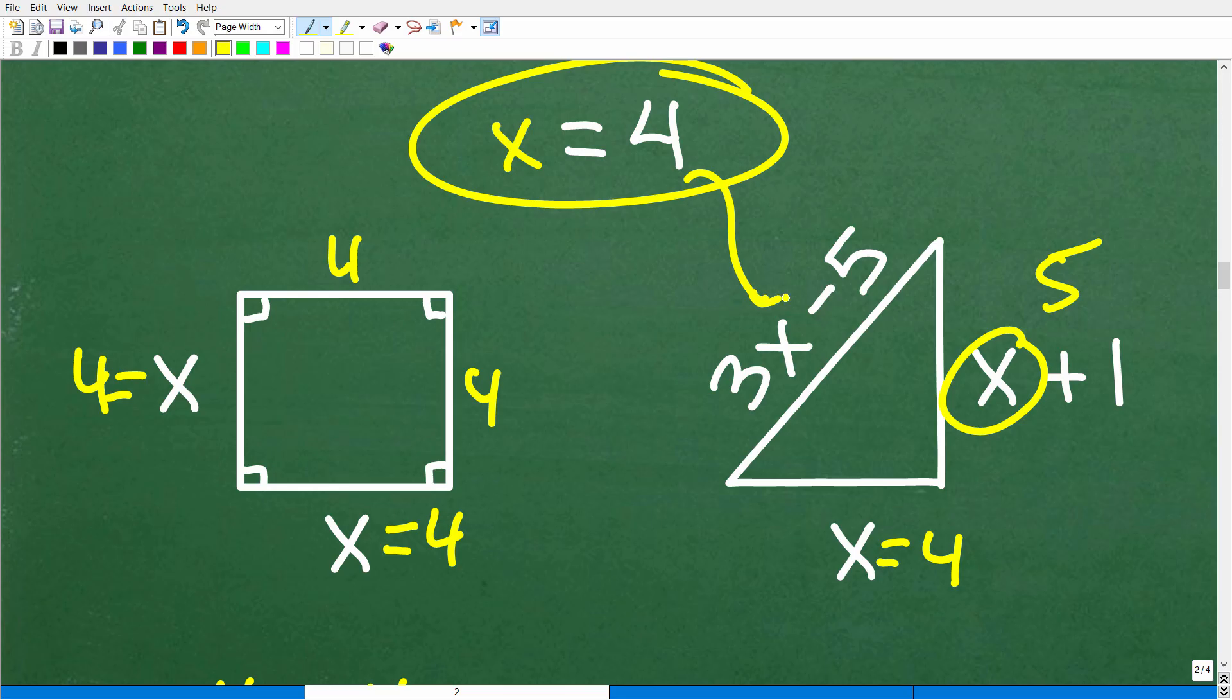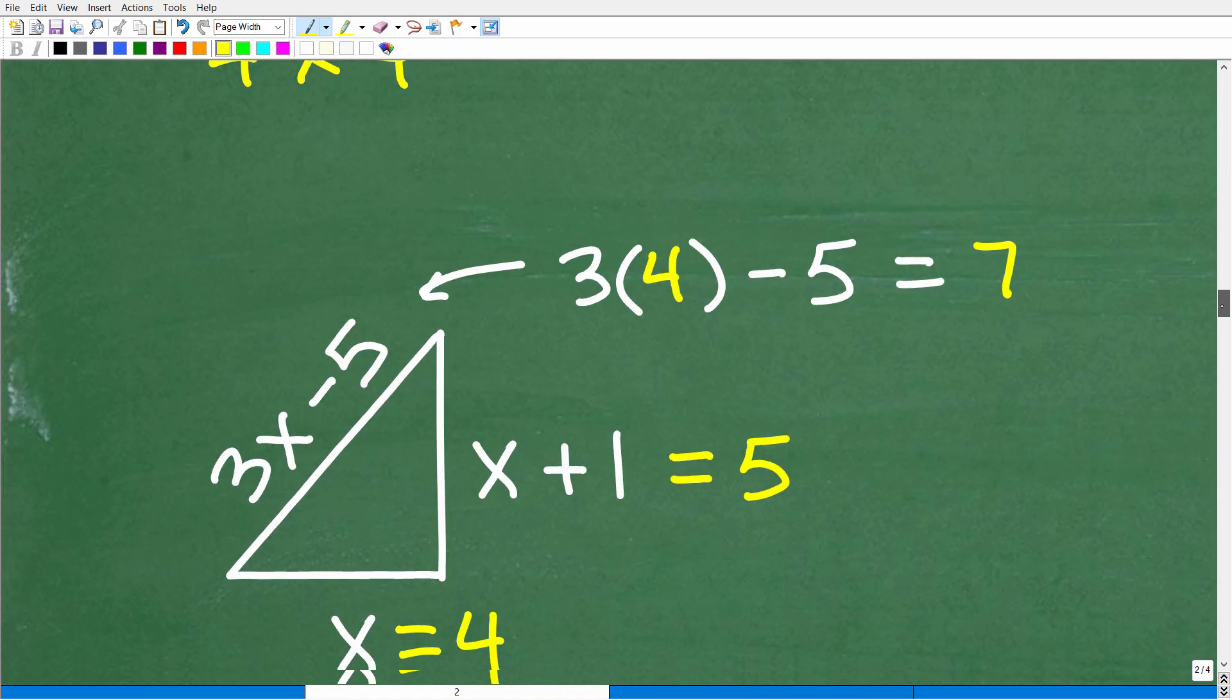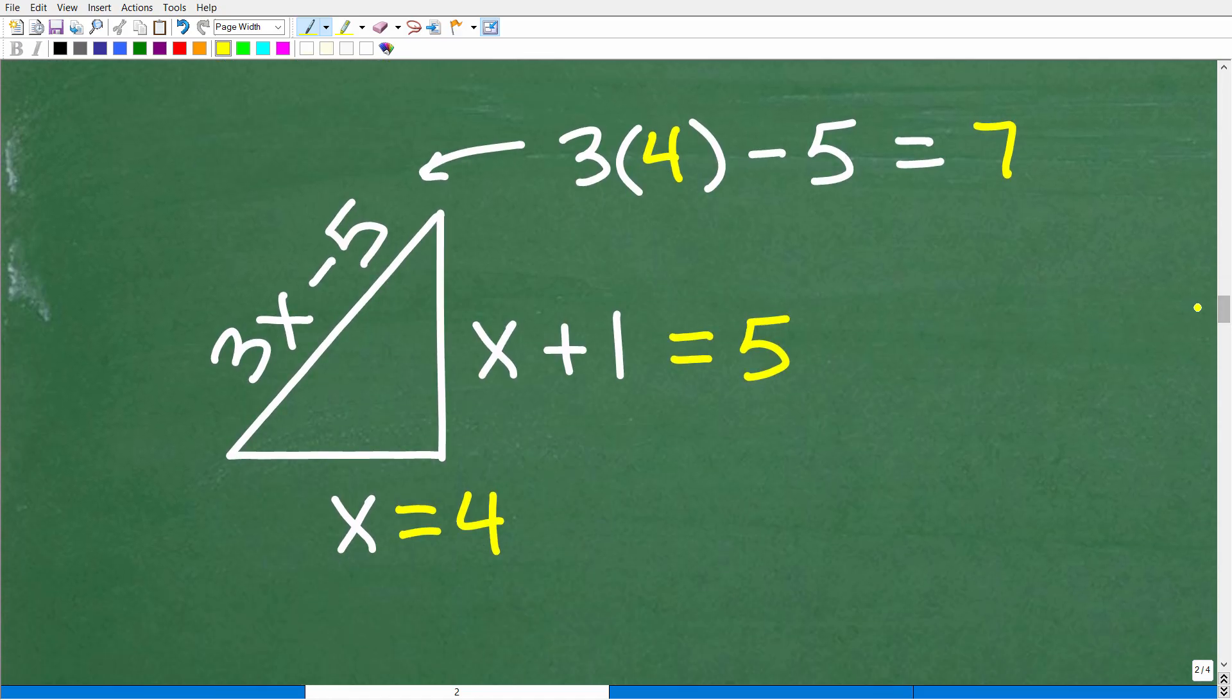And then here, if I plug in a 4, that's going to be what? 3 times 4, 12 minus 5, which of course is 7. So here is all that lovely work right here with the triangle. So we have 4, 5, and 7.